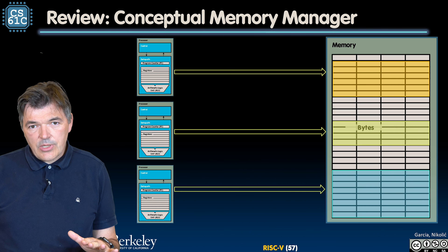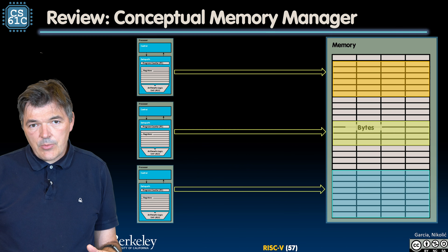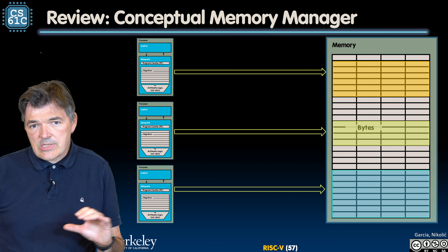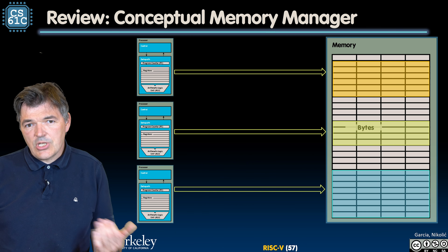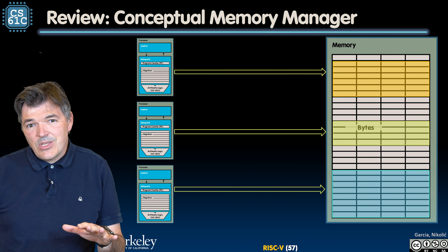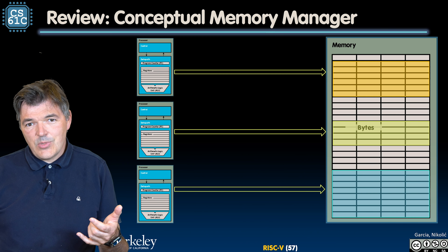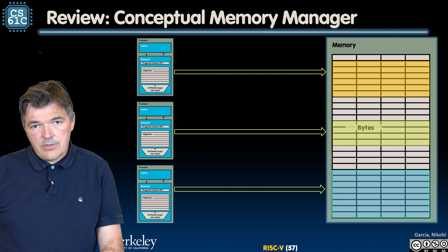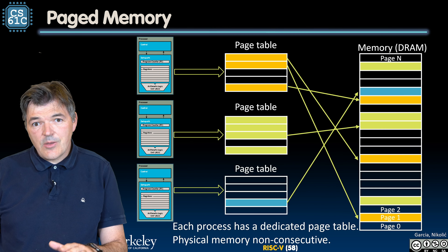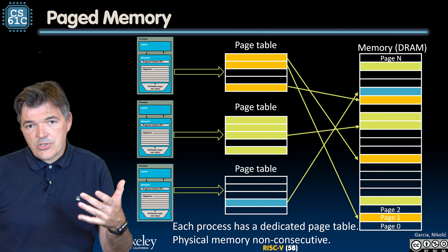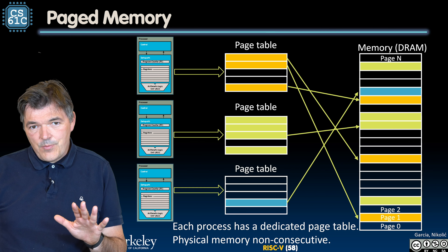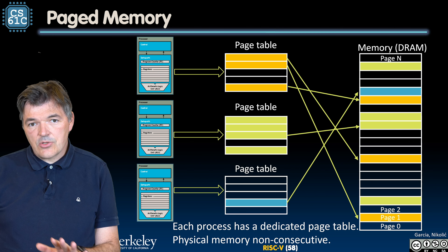Let's see how this works with our memory manager. Our conceptual memory manager assigns some part of memory to each process. Every process has access to the full memory, but they generally don't use all of it. Each process often has a large gap between the heap and the stack that is empty, unused memory. In practice, the paged memory system essentially shuffles pages as convenient. Address translation happens through page tables.